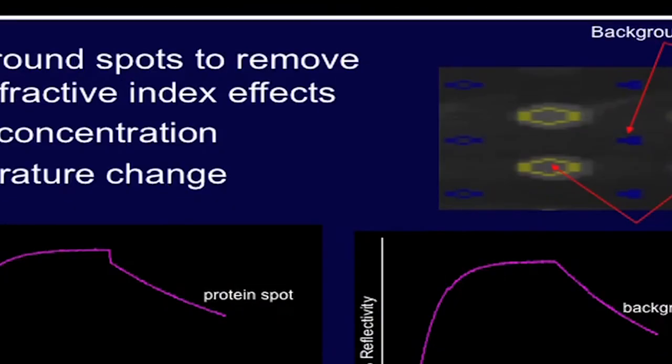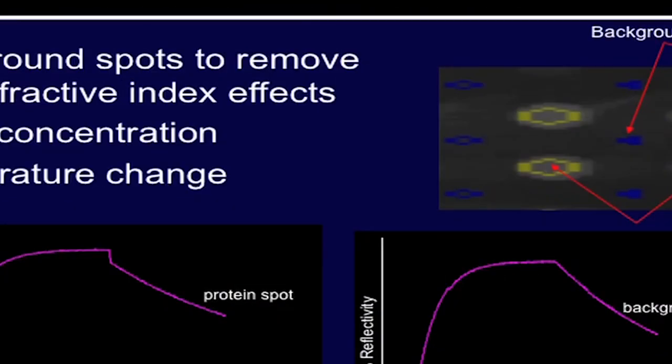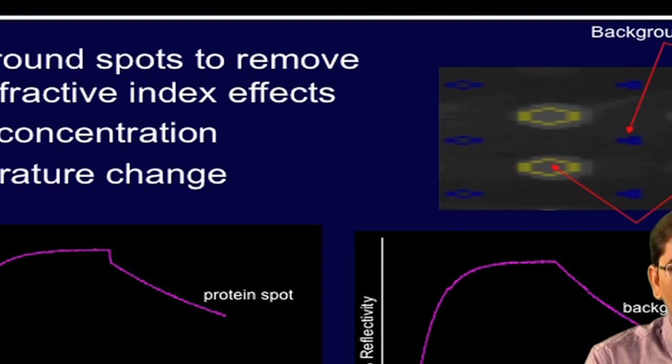The background spots are used to remove the bulk refractive index effects. These are spots of interest, and there are four software-generated spots. The panel on the top in the slide shows that the protein spots with signal, and the blue one represents the reference spot signal. In the graph below, you can see the X-axis represents time in seconds and the Y-axis shows percentage reflectivity. The left-hand side graph shows the non-subtracted curve. So, when we subtract the reference spot intensity generated by software from the protein signal, a protein A background-subtracted signal image is generated, which is represented in the right-hand side graph.